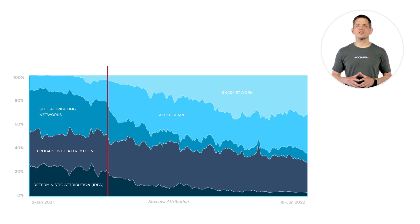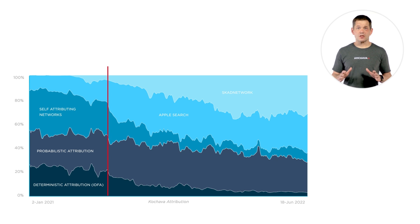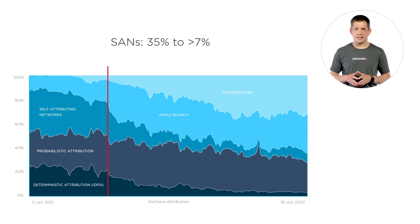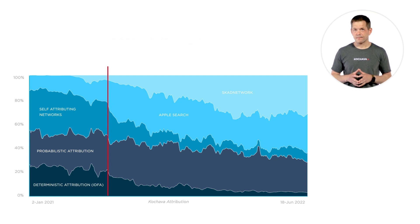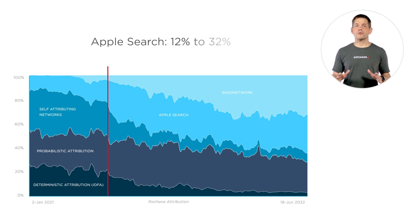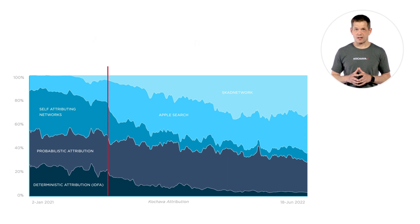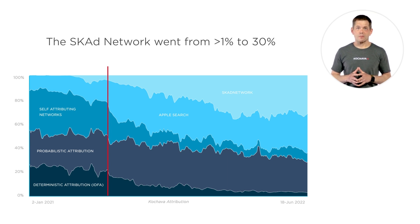Let's take a look at self-attributing networks. Remember, these are the big O and O networks like Facebook and Google, and this group made up 35% of total attributions prior to ATT and they now make up less than 7%. Apple Search grew from just 12% of overall attributions to 32%, and the SK Ad Network went from under 1% to 30% of total.